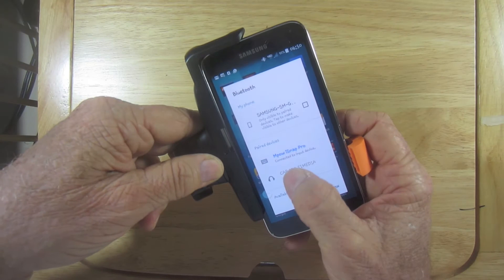Turn on Bluetooth and select MPOW iSnap Pro. Press the button to take the picture.